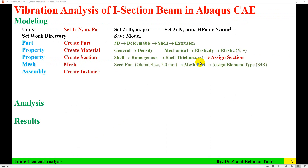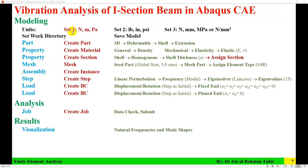So these are the steps which I have followed. I set units as Newton, meter, Pascal, and then I set the work directory. I saved the model, created a part as 3D deformable shell extrusion. Then I created material by assigning density, modulus of elasticity, and Poisson's ratio. I created a section with shell homogeneous, thickness equal to the thickness of the web and flange, and then assigned the section. Then I meshed: seed part with global size 5 millimeter, mesh part, and assigned element type S4R. Then I created an instance and created a step: linear perturbation, frequency, using the Lanczos solver, with 15 eigenvalues requested.